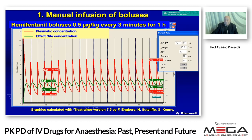With remifentanil, increasing different boluses of 0.5 mcg/kg every three minutes for one hour, the concentration remains always the same. This is why it is called a friendly drug — we have no fear of opioids in intensive care or anesthesia when we have drugs we can manage very well without problems.